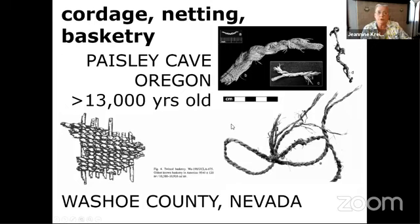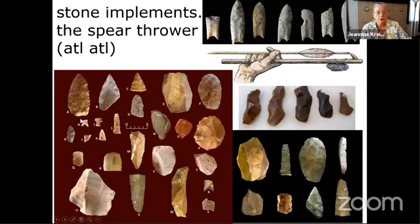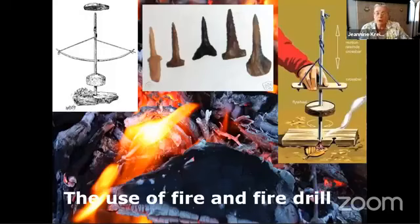They brought the knowledge of how to make all kinds of stone tools. They had a spear thrower — the atlatl — which uses an extra throwing device to make your spear go farther. These are examples of Paleo Indian period tools: scrapers, knives, drills, and punches. They also brought the use of fire and the fire drill — these are examples of drills they could use to start fires.